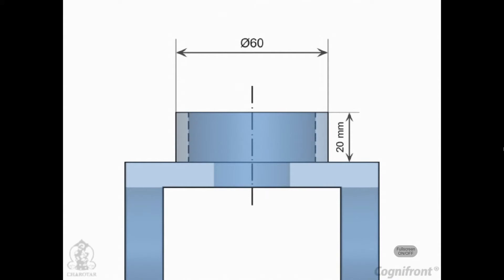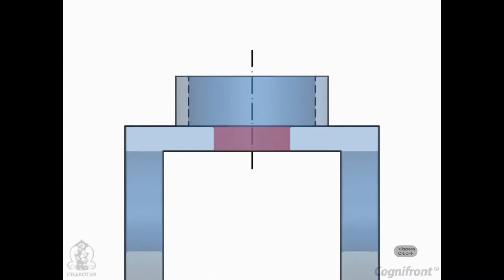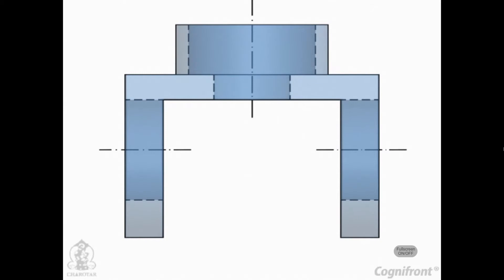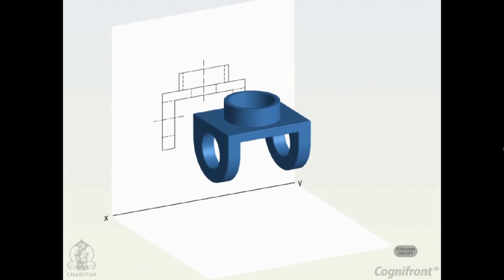The cylindrical block has inner diameter. There is a through hole of diameter 30 mm. These parts are shown with dotted lines as they are hidden in front view. So, this completes the front view of the bracket.